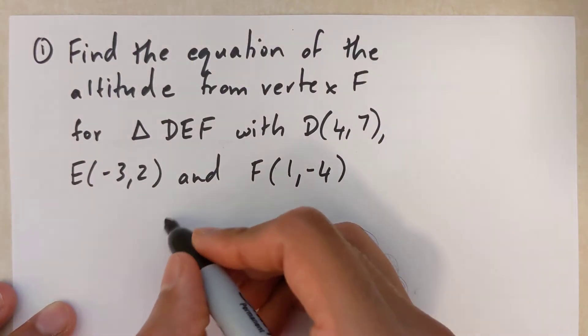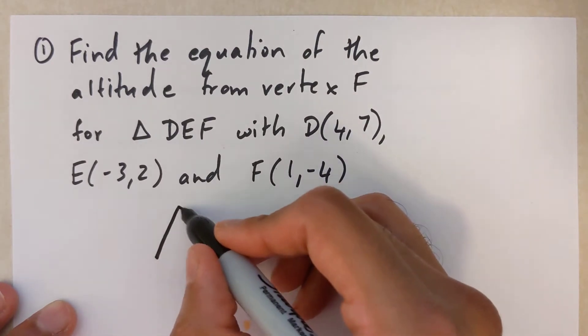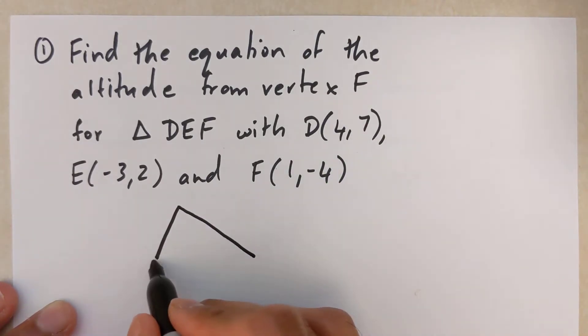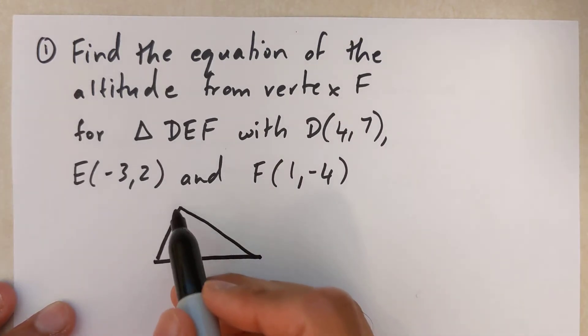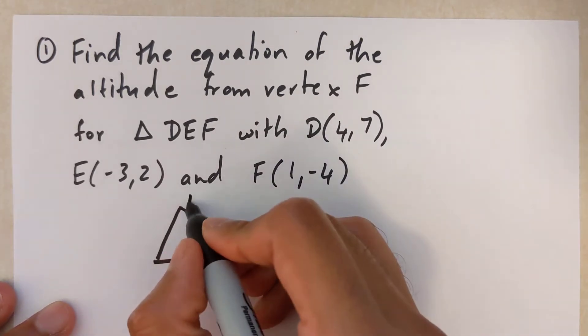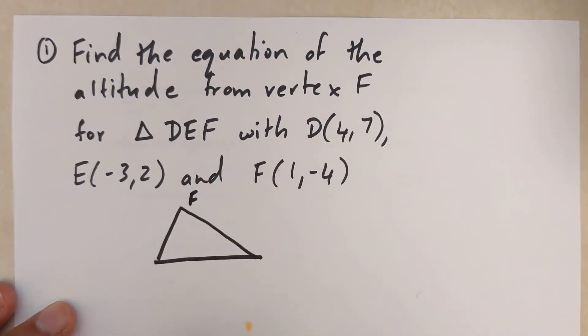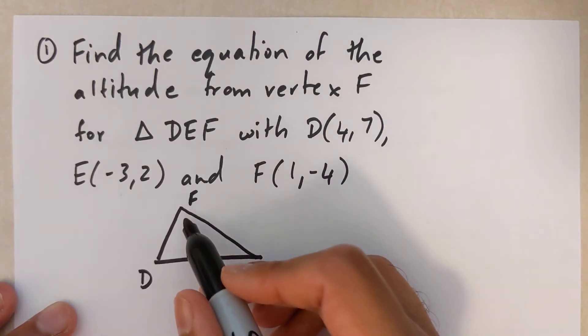I'm going to draw the same triangle that I draw for median and right bisector. Make sure you always label your vertex on the top. In this case it's going to be F on the top. You can label D and E however you want, it doesn't really make a difference. Now I'm going to draw the altitude.